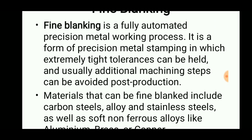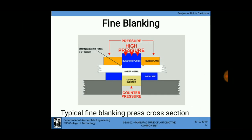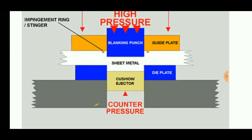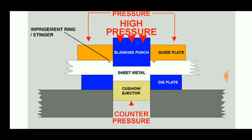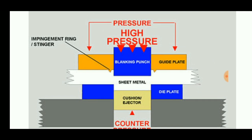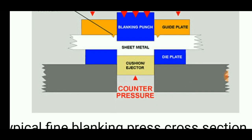Fine blanking is a fully automated precision metalworking process — a form of precision metal stamping in which extremely tight tolerances can be held and additional machining steps can be avoided. The materials used include aluminum, brass, and copper. In this operation, sheet metal is placed between a die plate and a blanking punch — either hydraulic or mechanical — with a guide plate applying high pressure so the sheet metal can be blanked out.